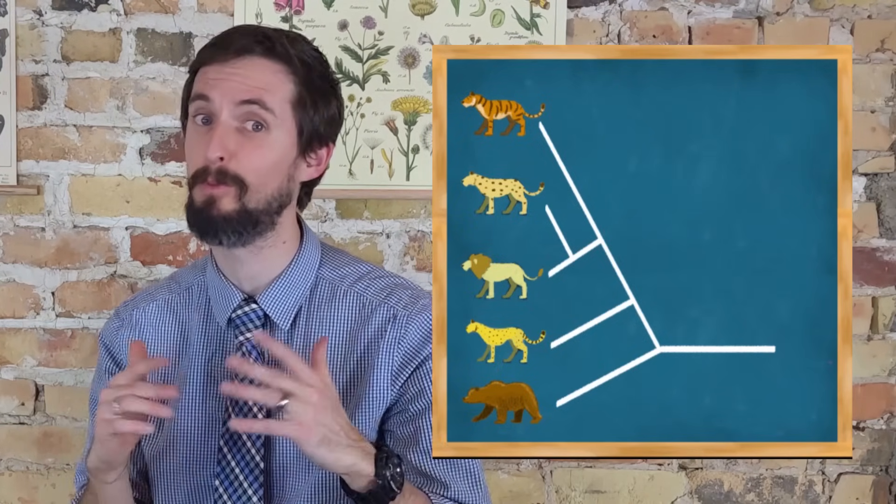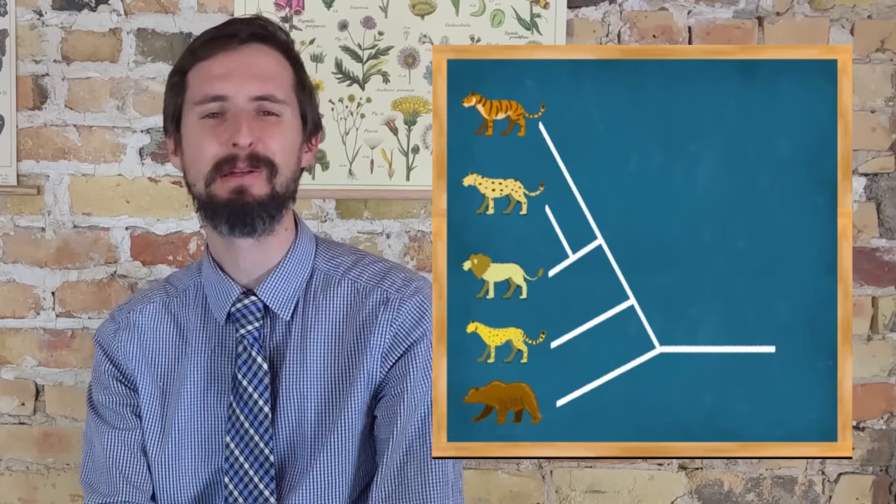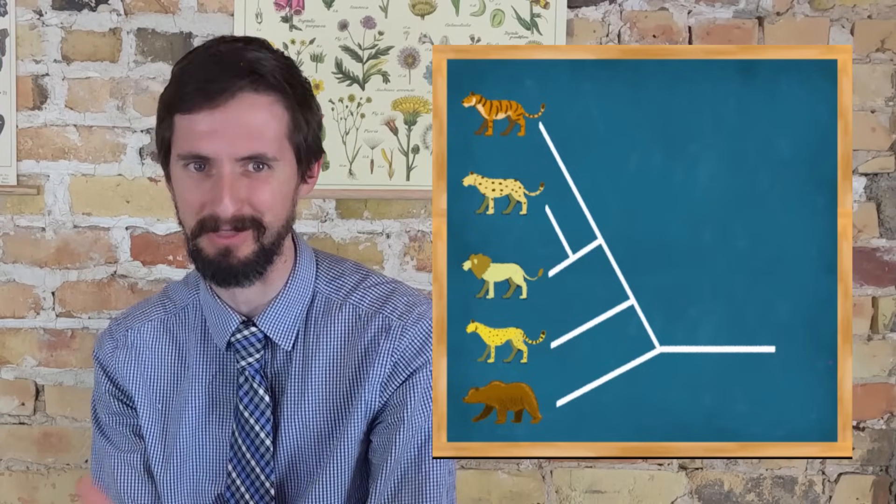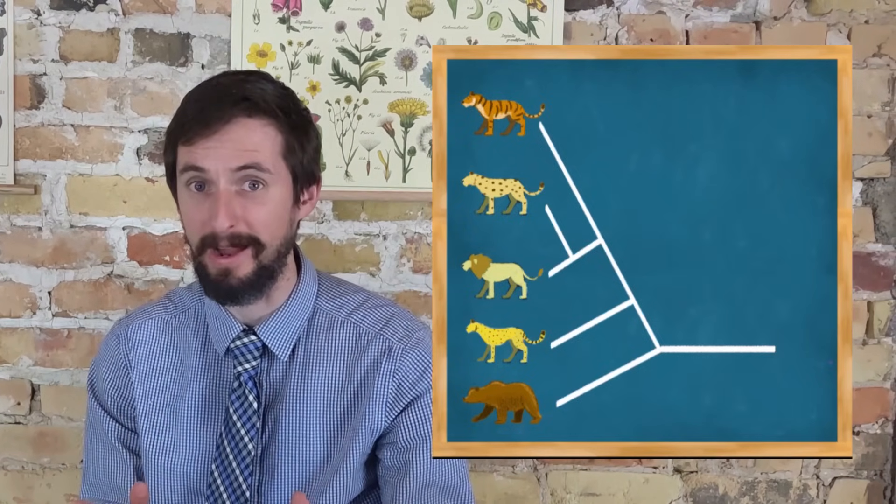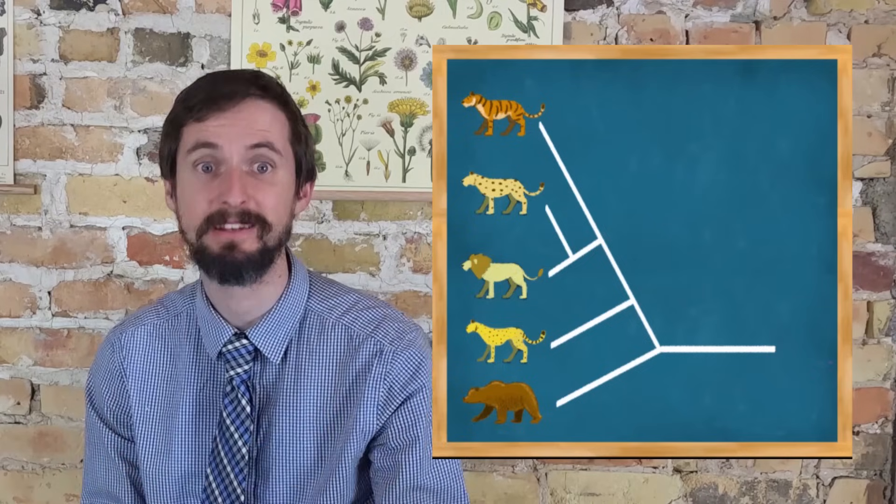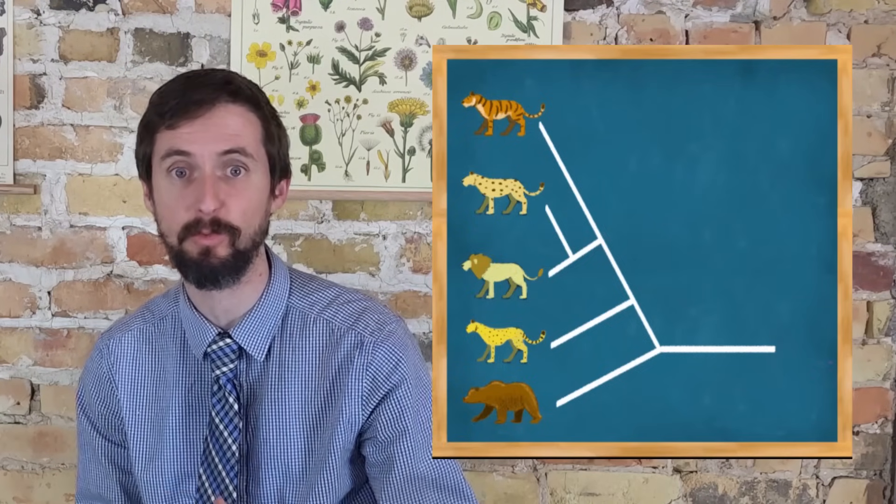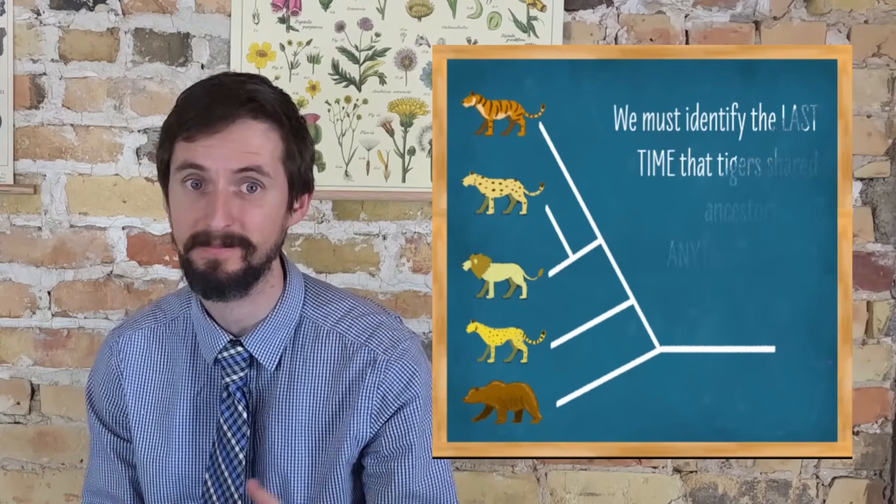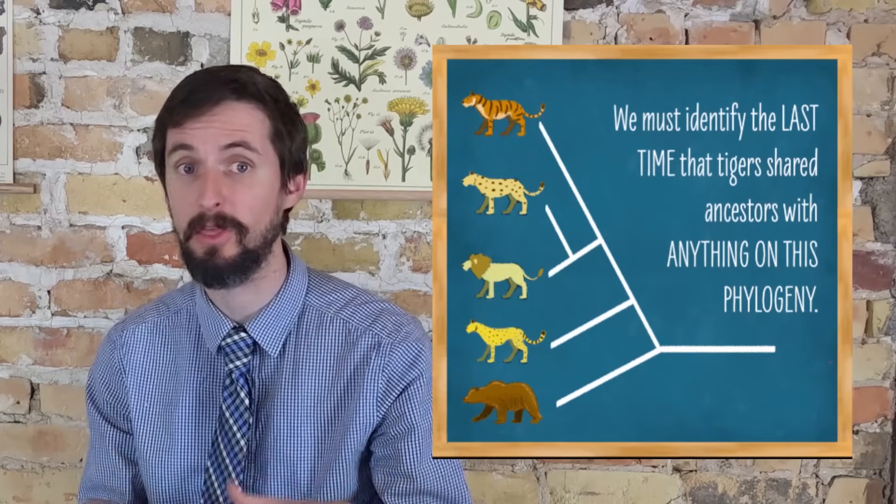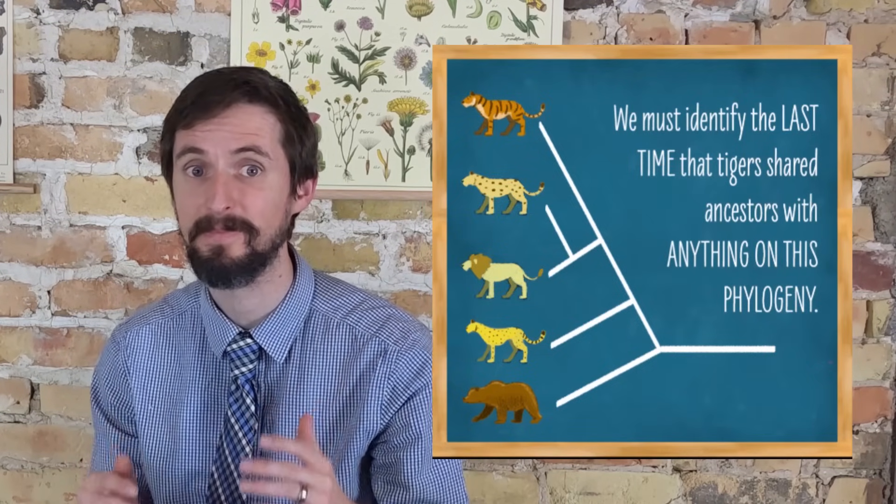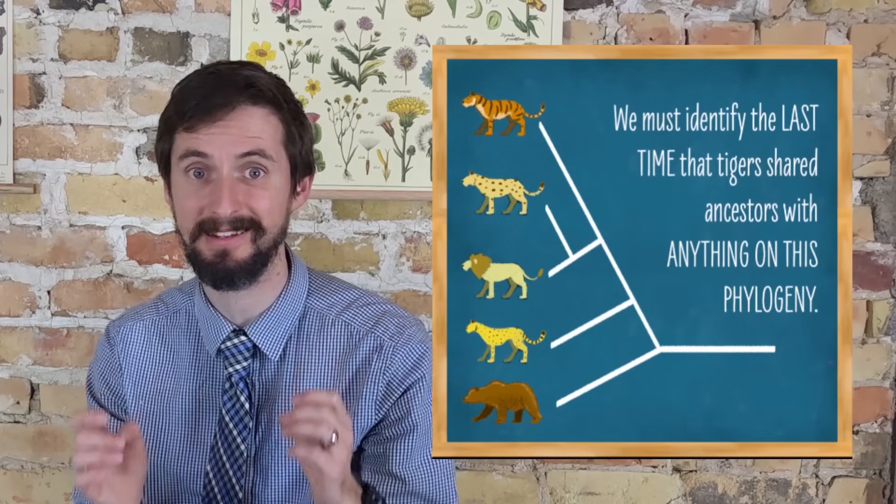Even phylogenetic graduate students often make mistakes with this, because the more you know about these diagrams, the more wrong ways you can come up with to interpret them. The only right way is to identify the last time that tigers share common ancestors with any other living group on this phylogeny. And everything else that shares those ancestors with the tiger are equally related to the tiger.